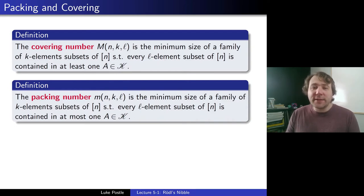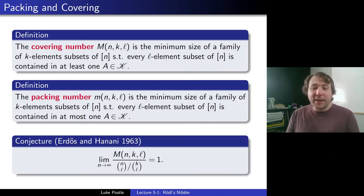So then, what is the relation there? If we know the design conjecture, if we know we have this block design, of course the covering and the packing number are equal and they're exactly the number they should be. And Erdős and Hanani were conjecturing, therefore, an asymptotic version of the design conjecture in 1963, that the limit as n goes to infinity of the covering number divided by [n choose ℓ]/[k choose ℓ], that would be the number of sets you would need if the design actually existed, that that number should go to one.